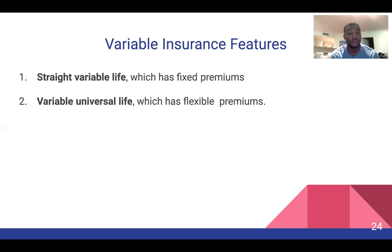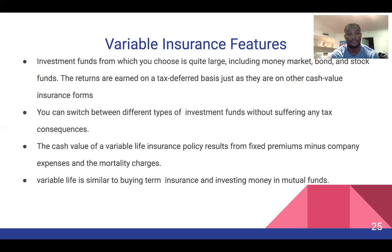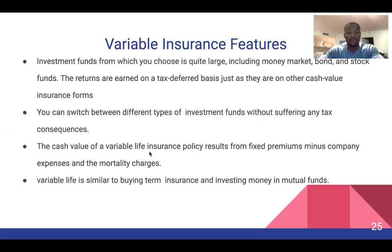There's straight variable life, which has fixed premiums, and variable universal life, which has flexible premiums. Investment funds from which you choose are quite large, including money market, bond, and stock funds. Returns are earned on a tax-deferred basis, just as they are on other cash value insurance forms. You can switch between different types of investment funds without tax consequences. The value of a variable life insurance policy results from fixed premiums minus company expenses and mortality charges — variable life is similar to buying term insurance and investing money in mutual funds.